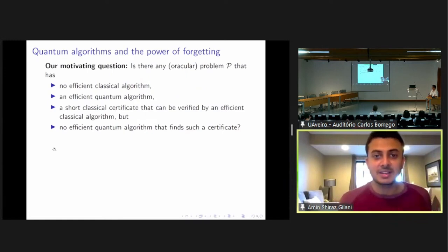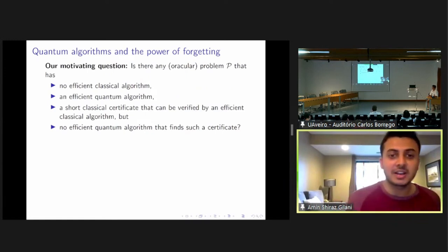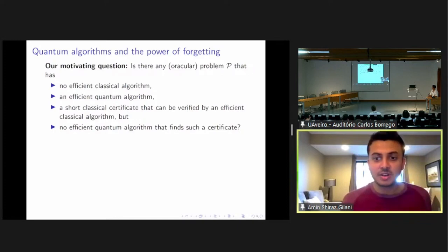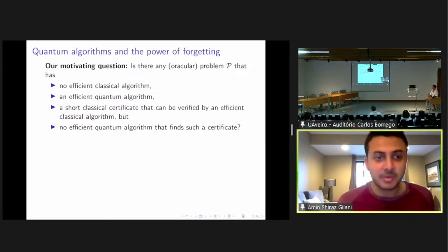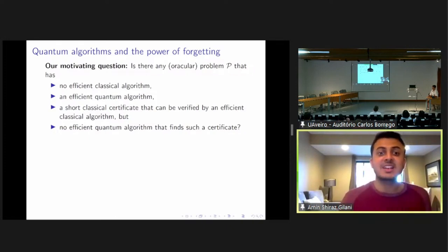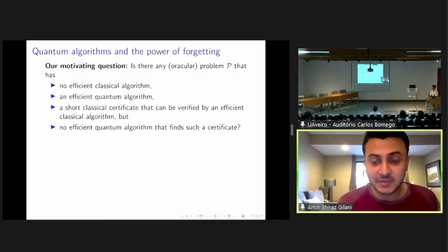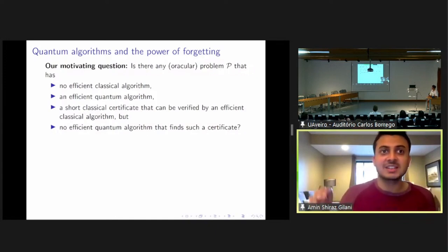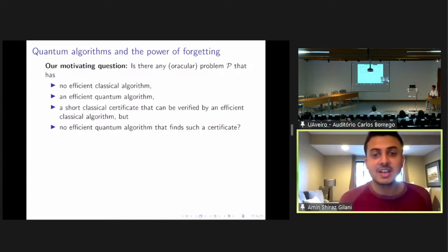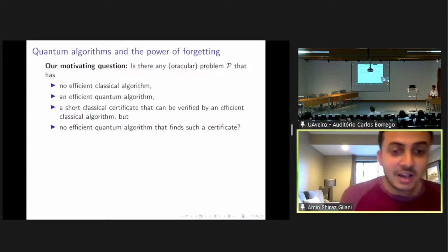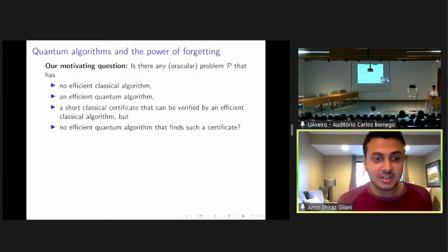So what do we mean by this notion of the power of forgetting? What is our motivating question? We are looking for an oracular problem that has no efficient classical algorithm, but has an efficient quantum algorithm. And it also has a short classical certificate that could be fed into an efficient classical verifier algorithm that would tell you whether a given solution is actually a solution or not. In other words, it means that it can be efficiently verified.